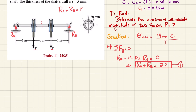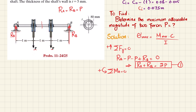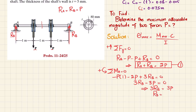Applying the second equilibrium condition — sum of all moments about point A equals zero, taking counterclockwise as positive. The moment from P at 1 m is clockwise (negative), P at 2 m is also clockwise (negative), and Rb at 3 m is counterclockwise (positive). So: negative P times 1, minus P times 2, plus 3 times Rb equals zero. This gives 3Rb equals 3P, so Rb equals P.